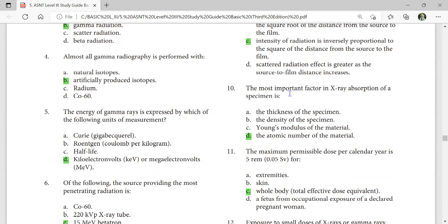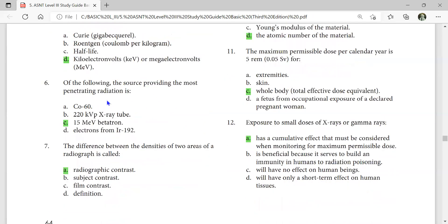They are radioisotopes. The most important factor in x-ray absorption of a specimen is atomic number of material. The maximum permissible dose per calendar year is 5 rem (0.05 sievert) for whole body total effective dose equivalent. The energy of gamma rays is expressed in keV or MeV, kiloelectron volt or megaelectron volt. Of the following, the source providing the most penetrating radiation is 15 MeV betatron. The difference between densities of two areas of radiography is called radiographic contrast. Exposure to small doses of x-ray and gamma rays has a cumulative effect that must be considered when monitoring the maximum permissible dose.